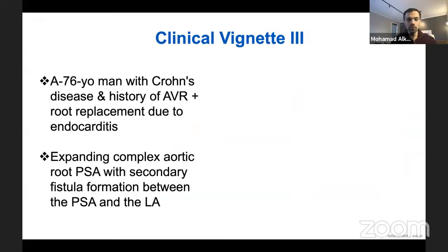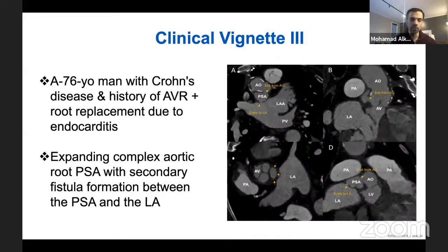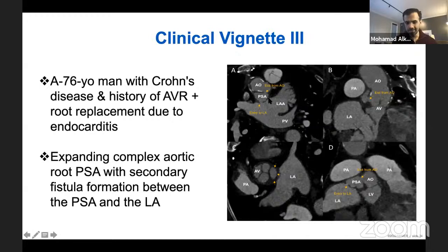Case three: a 76-year-old man with Crohn's disease and history of aortic valve and root replacement in Florida for endocarditis — the surgeon described it as a 'commando procedure,' which I had to look up, meaning something very complex. During follow-up CT scanning, they started seeing an expanding pseudoaneurysm in the aortic root. Two prior percutaneous attempts to tackle it with plugs were unsuccessful, and he was referred to us.